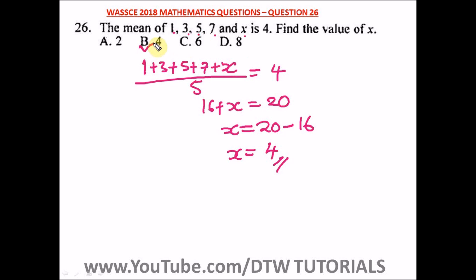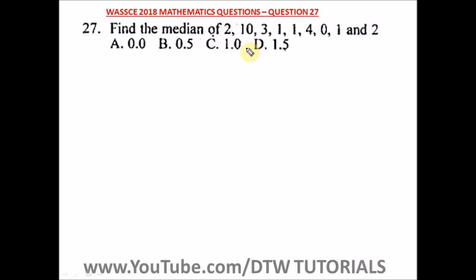Question 27 of the 2018 WAEC mathematics past question. It says find the median of 2, 1, 0, 3, 1, 1, 4, 0, 1, and 2. To find the median, we need the middle number, so we rearrange the numbers in ascending order.